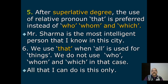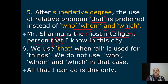Fifth rule: After superlative degree, the use of relative pronoun 'that' is preferred instead of who, whom, or which. Example: 'Mr. Sharma is the most intelligent person that I know in this city.' یہاں superlative degree use ہوئی ہے اس لیے 'that' use کیا گیا، 'whom I know' نہیں کہیں گے بلکہ 'that I know' کہیں گے۔